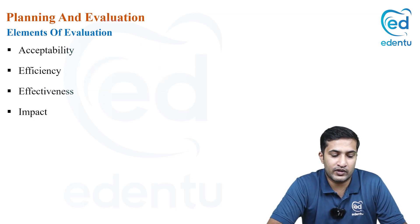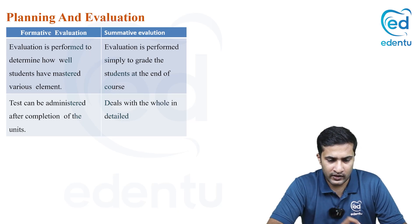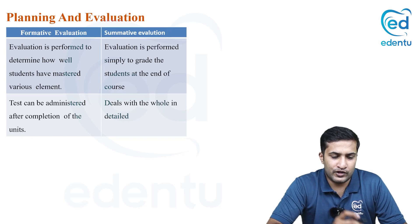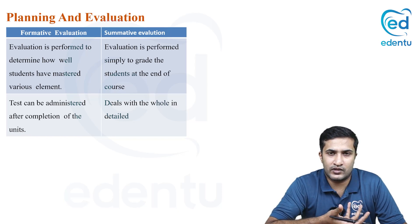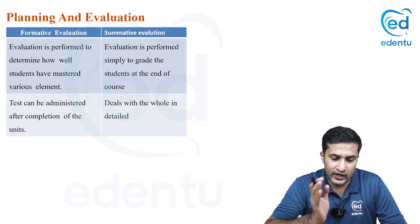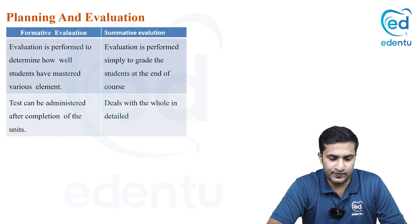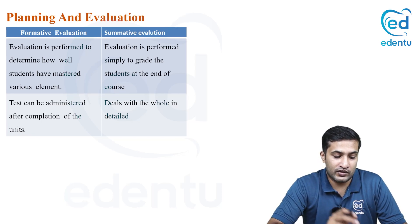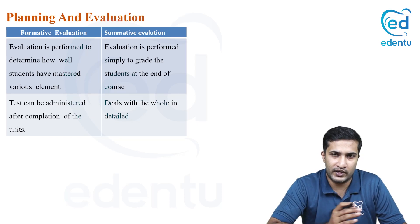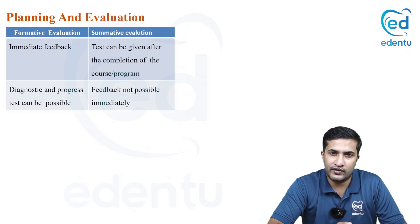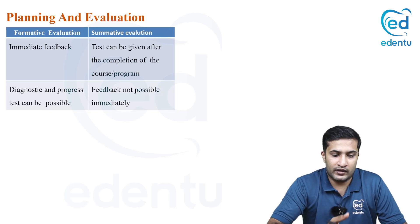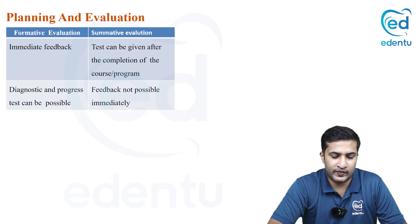The elements of evaluation are: relevance, progress, accessibility, acceptability, efficiency, effectiveness, and impact. In detail: formative evaluation is performed during the program to determine how well objectives are being met after completion of each unit, giving immediate feedback and chance of correction, with diagnostic and progress tests possible. Summative evaluation is given after completion of the entire course to grade the outcome — it deals with the whole subject, and no corrective feedback is possible.